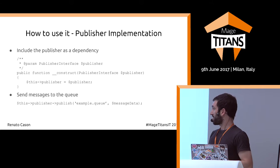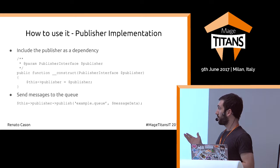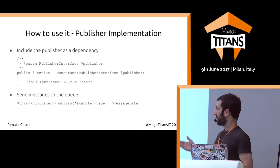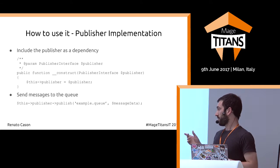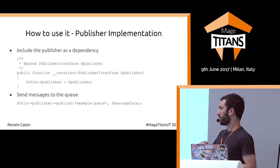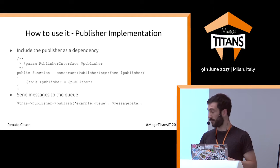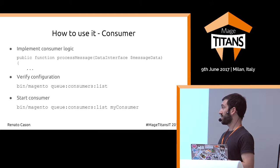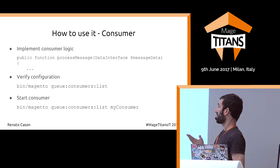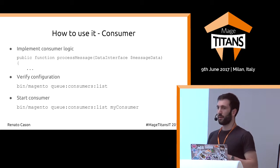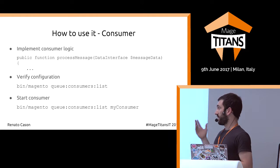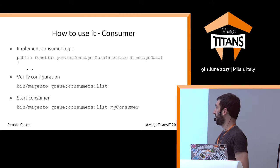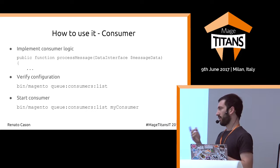For the code itself, you include the publisher as a dependency and from the class that needs it, call the publish method — which requires only the queue name configured in queue.xml — and send the message data. On the consumer side, you receive the same object type. Behind the scenes it's serialized, queued, and deserialized. The consumer class is the one you configured in queue.xml.